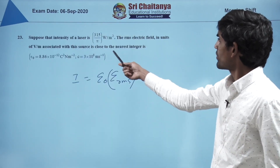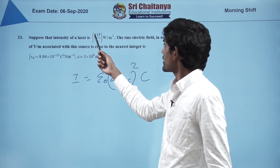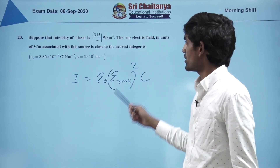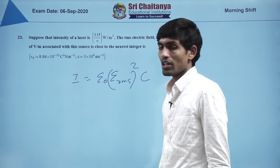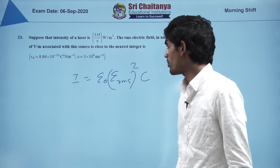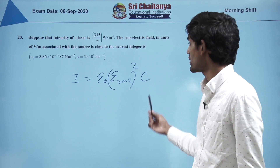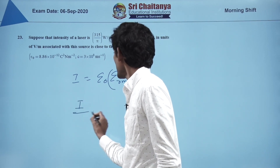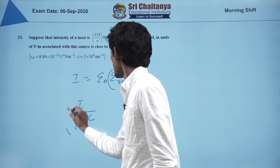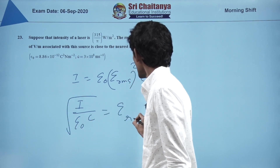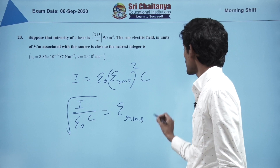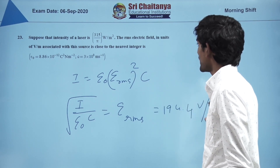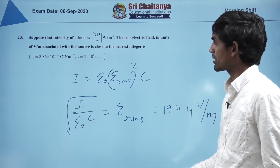Intensity of laser = 315/π. Using I = ε₀·E_rms²·c, we get E_rms = √(I/(ε₀c)). Substituting values gives E_rms = 194.4 V/m as the required answer.